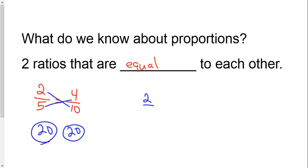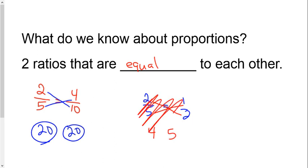In the same way, you know that 2 fifths is not equal to 1 half. I'm still going to leave the equal sign there, because that's how you write a proportion. Let's test and see if it is. 2 times 2 is 4, and 5 times 1 is 5, so definitely not a proportion. So a proportion is nothing more than when two ratios equal each other.